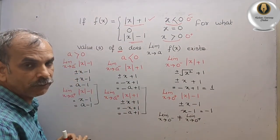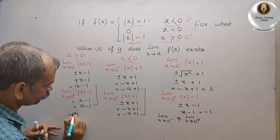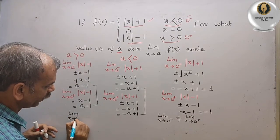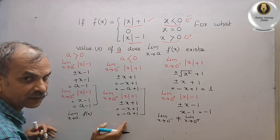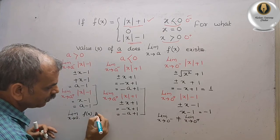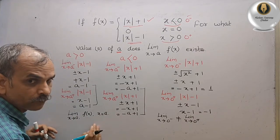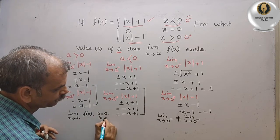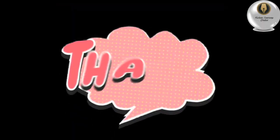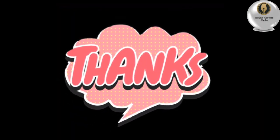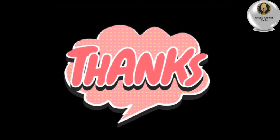By this conclusion, the limit as x tends to a of f(x) exists, and x equals a is a valid point for all a not equal to 0.